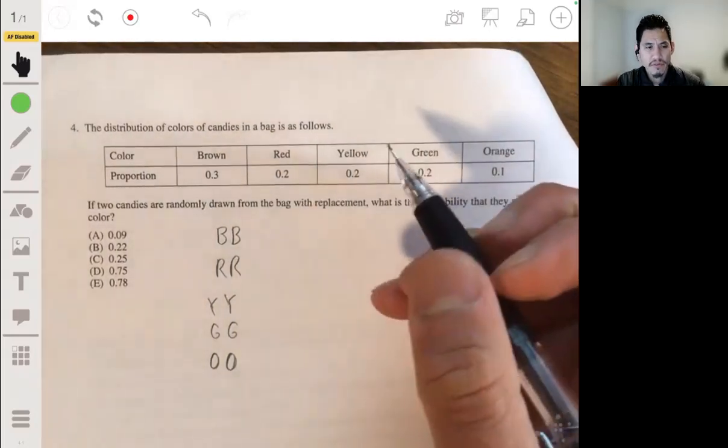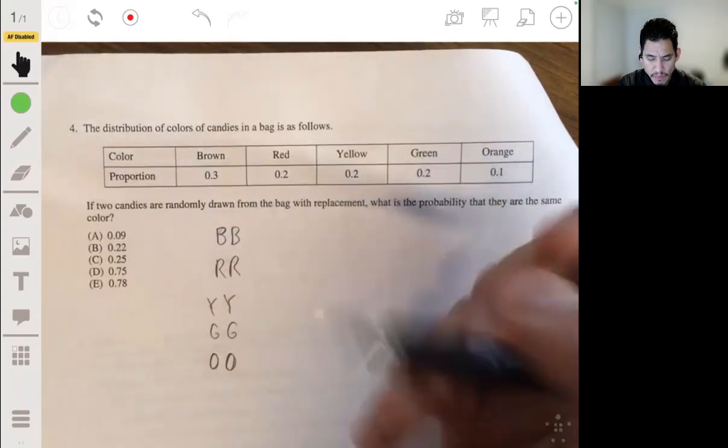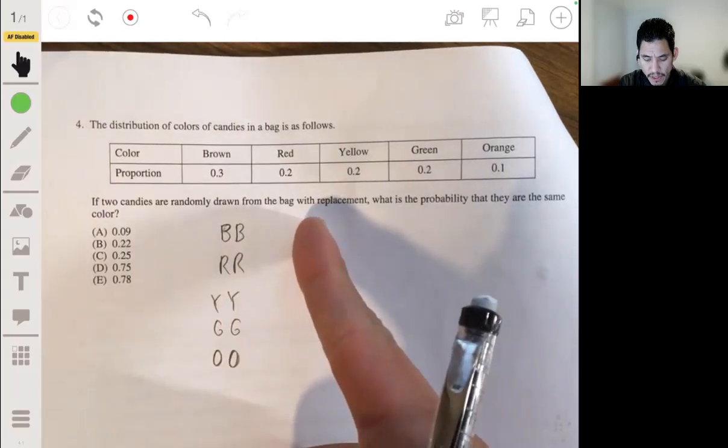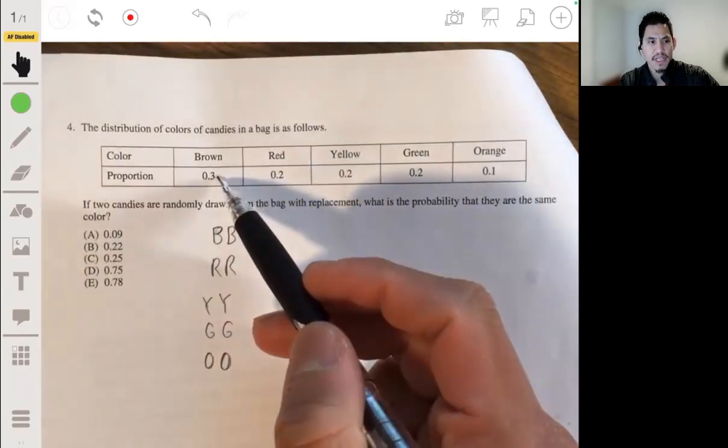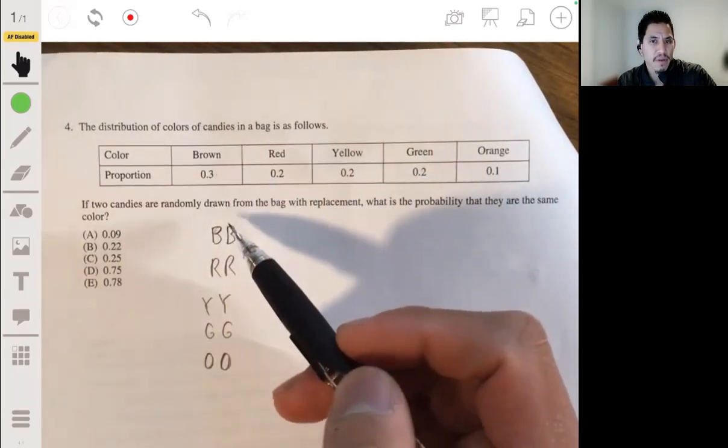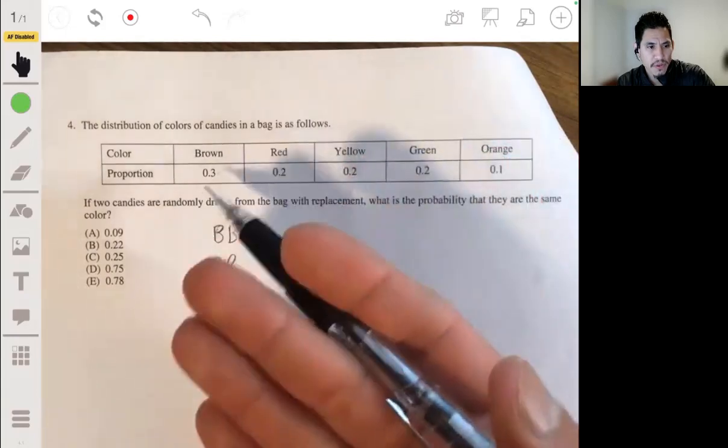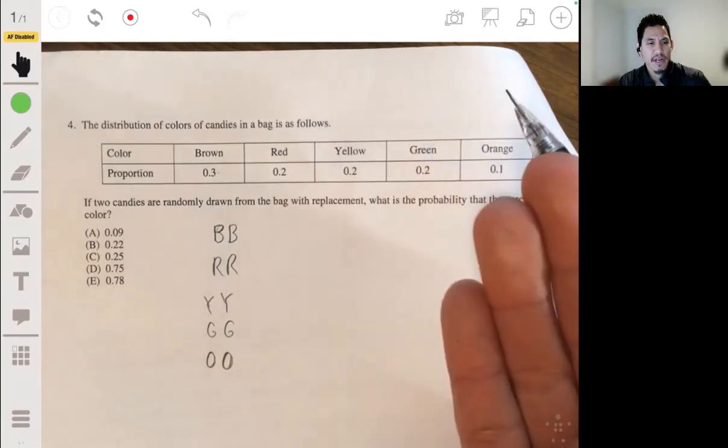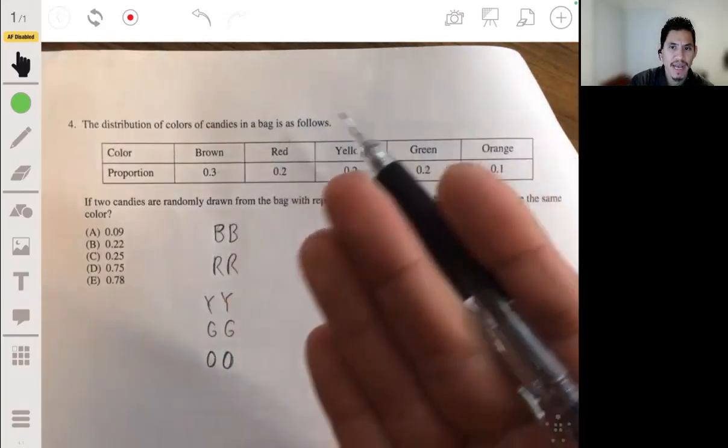Now what I would just do is just remember, if you're going to put the candy back, that means the probability, so it's just, for example, let's say you want to get two brown candies. The probability of drawing a brown candy on the first draw is 0.3. But if you put it back, the probability of drawing a brown candy on the second draw is still going to be 0.3 because it's back in the bag, it's just replaced.